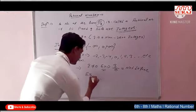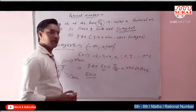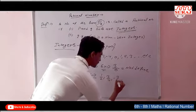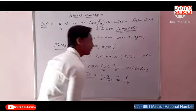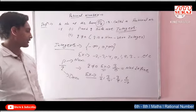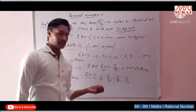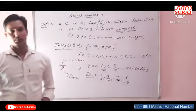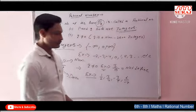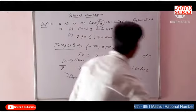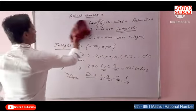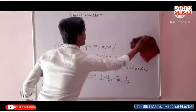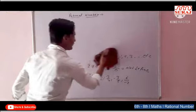Examples of rational numbers: integers le lo — 1 by 2, 3 by 4, negative sign ke saath minus 3 by 5, 6 upon 7. In sab mein numerator and denominator dono integers hain. Aage aata hai hamara — properties of rational numbers, usmein hum discuss karenge types of rational numbers.